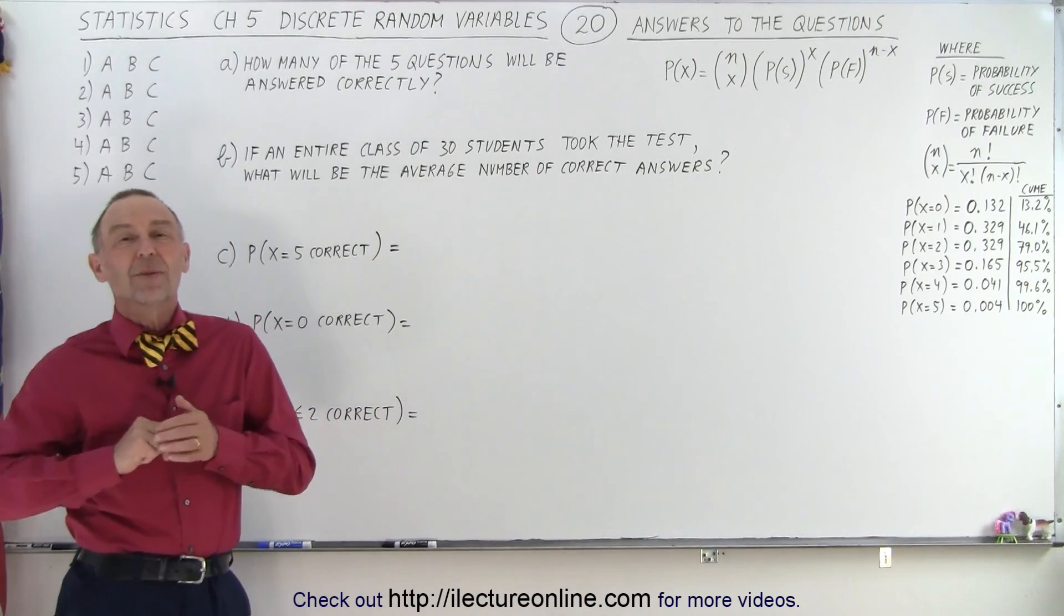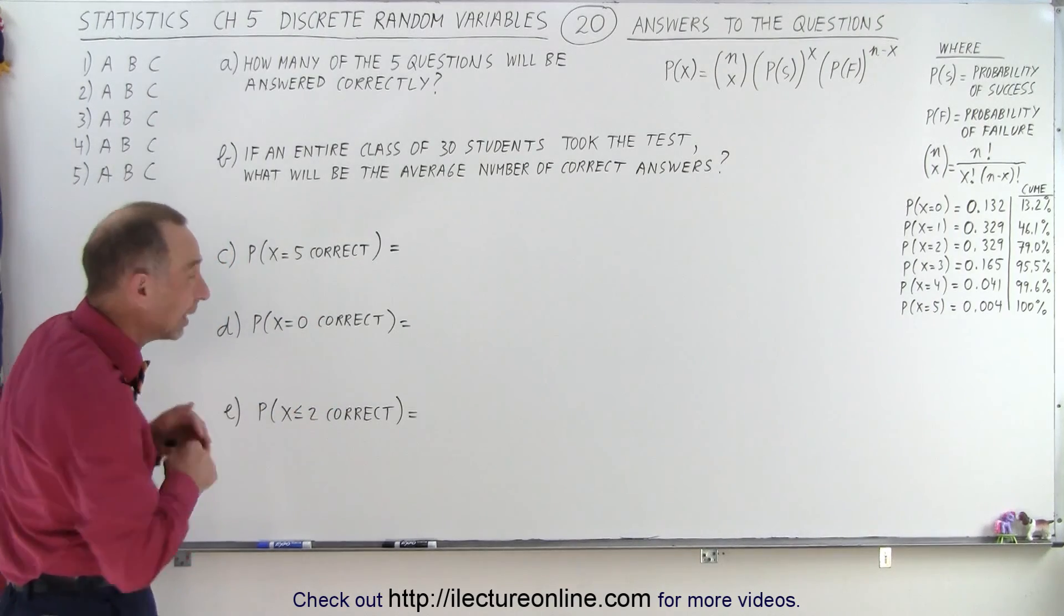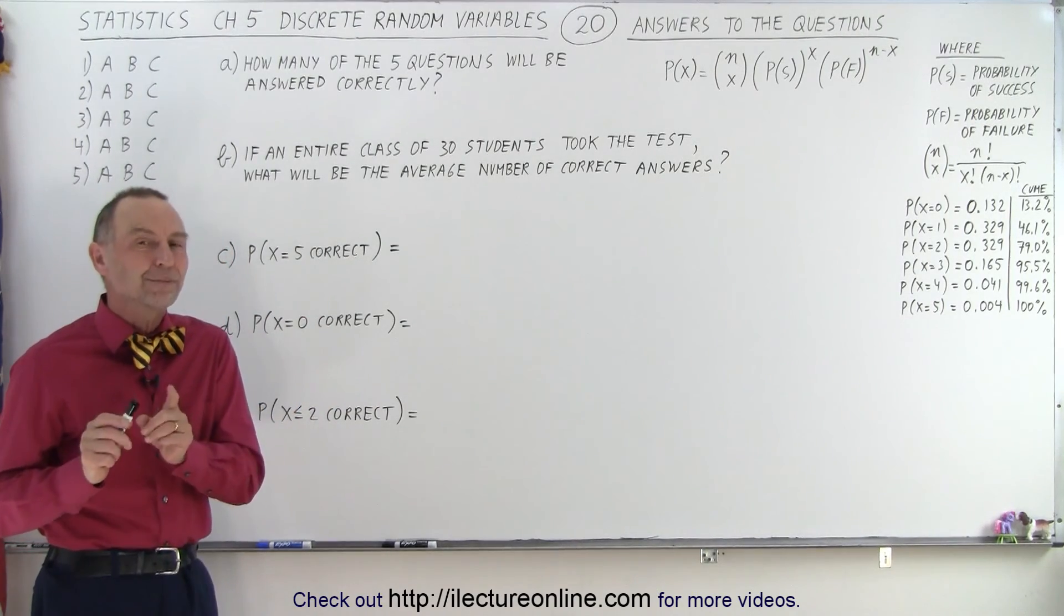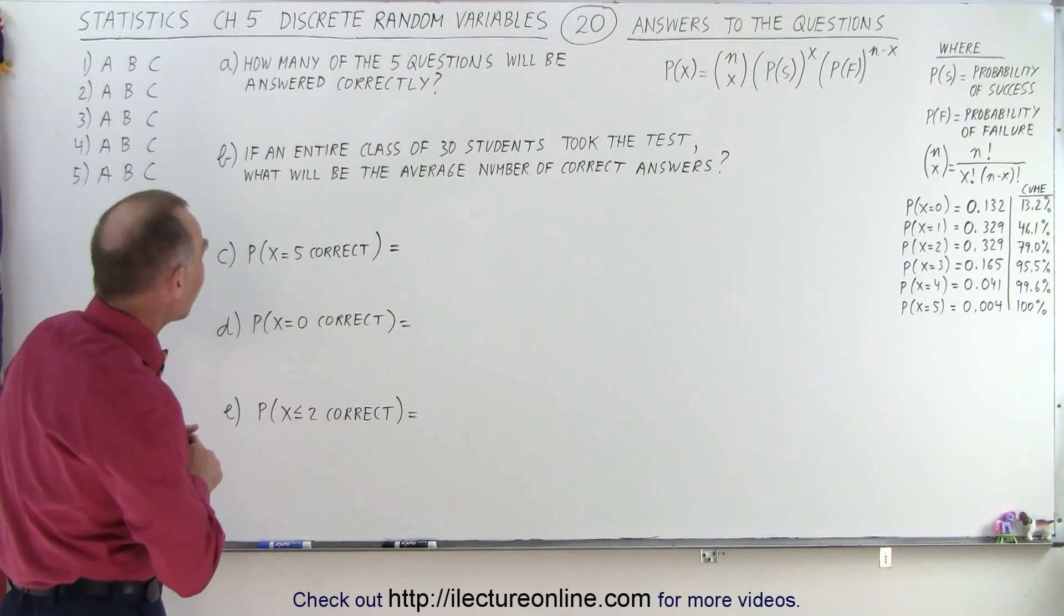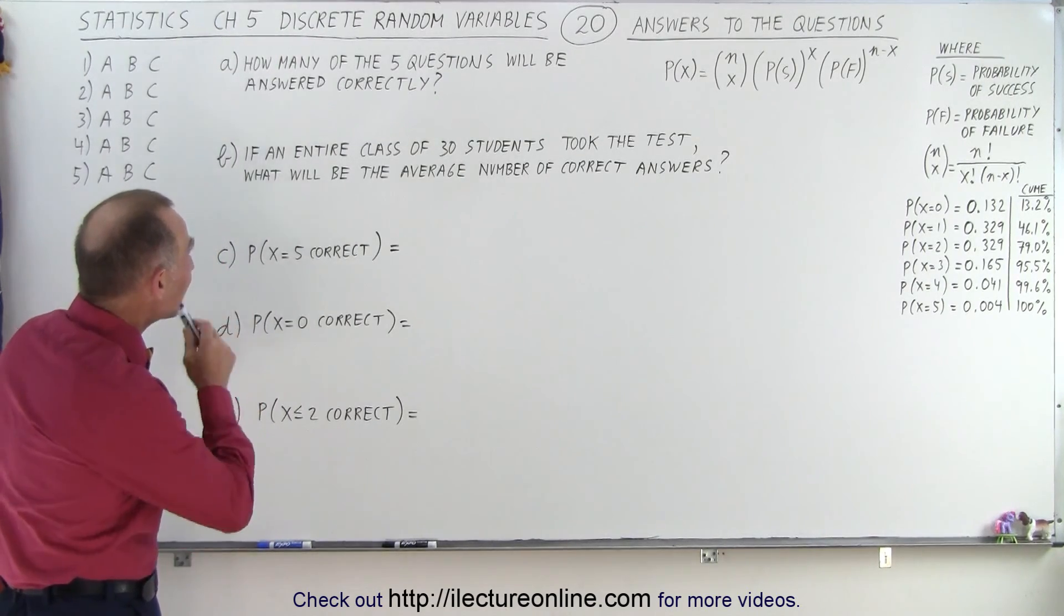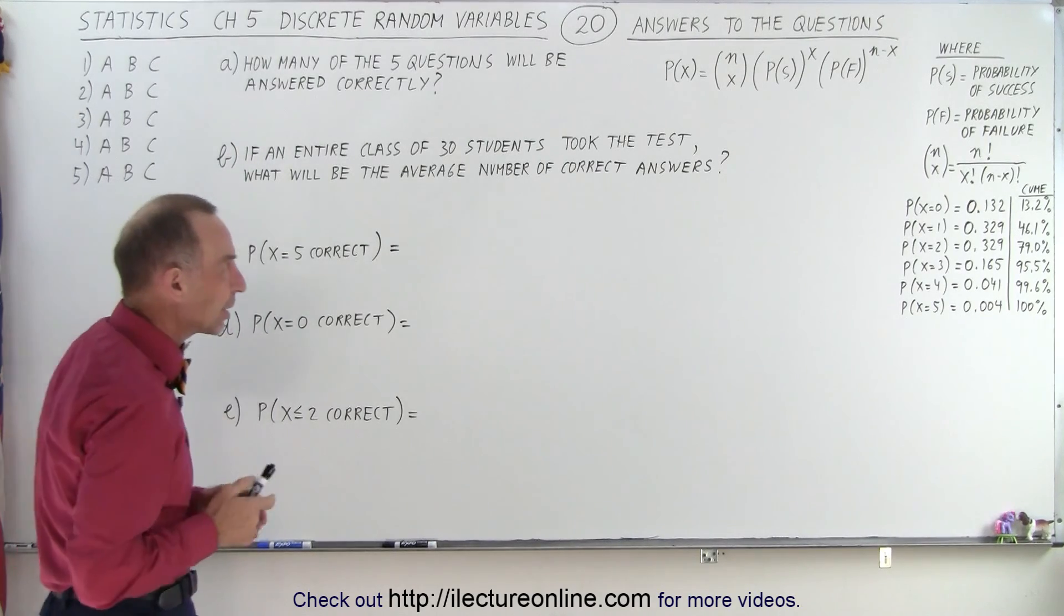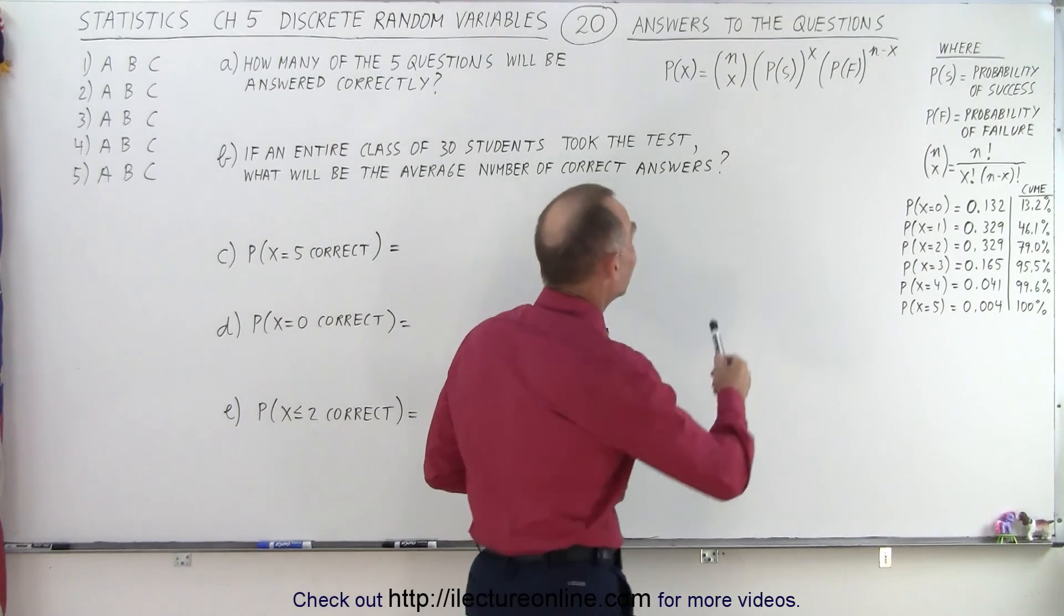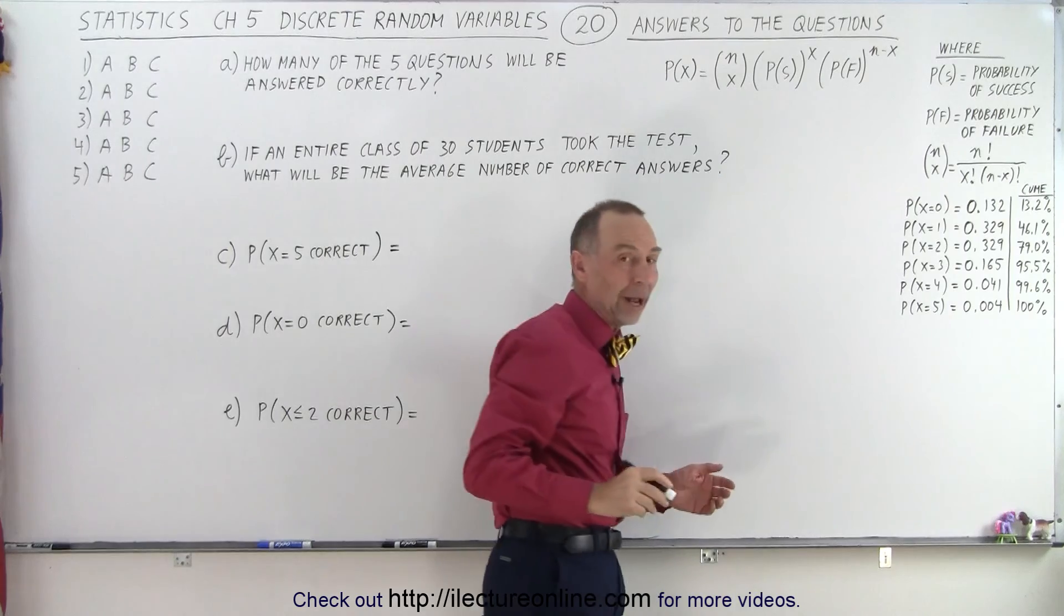And we were also faced with some additional questions. So here were the five questions we were faced with and we're now ready to answer them. Although for the first one we're going to need to be introduced with one additional concept. So it said how many of the five questions will be answered correctly. Now here when we go to the side, here we have the equation where we get the probability that X equals correct.